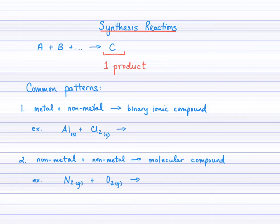For synthesis reactions, the key in recognizing a synthesis reaction is that one product is formed. You can see here that reactant A plus B plus perhaps more are combining to form one product, and that's the key for a synthesis reaction. We'll look now at some common patterns that we see with synthesis reactions.